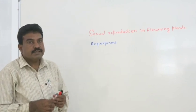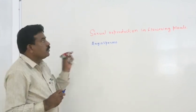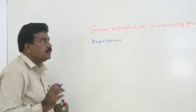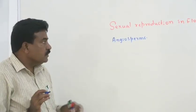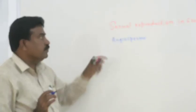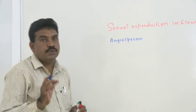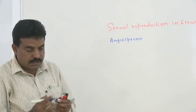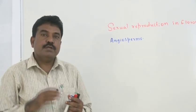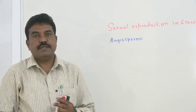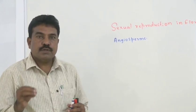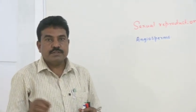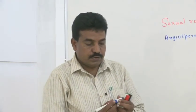Whereas, in this second chapter, we have to discuss only the sexual reproduction process. As we know, angiosperms are the most predominant group of plants. Therefore, the sexual reproduction event is also more complex in the case of angiosperms.